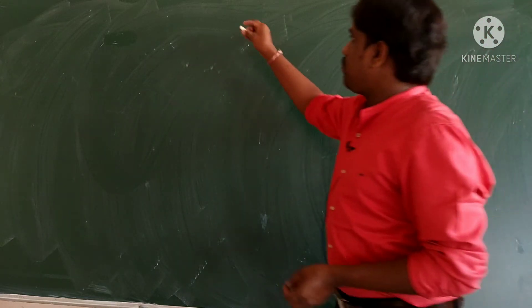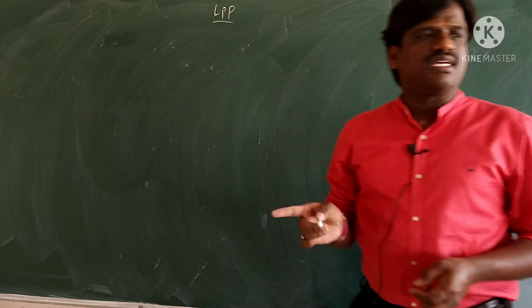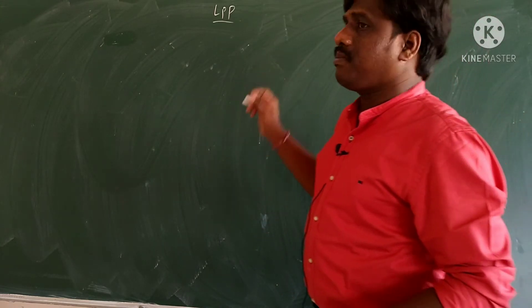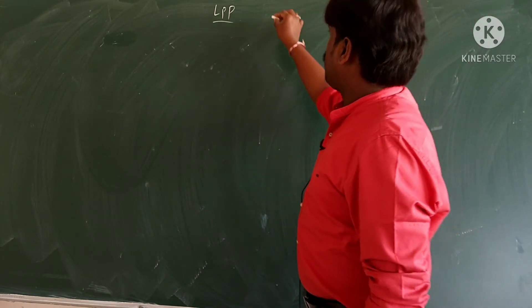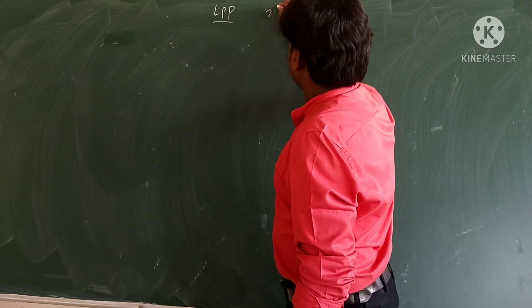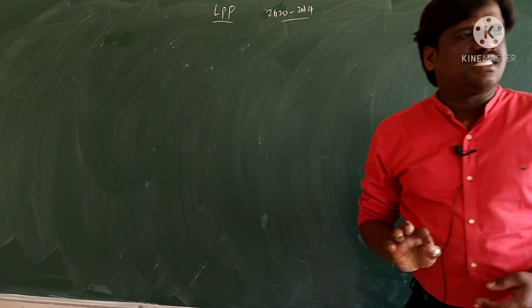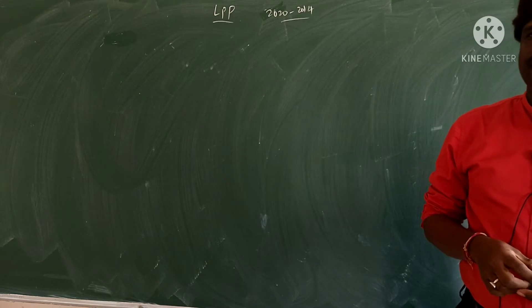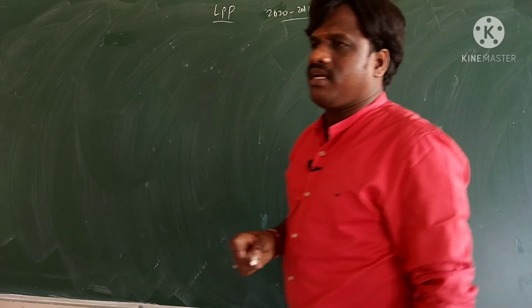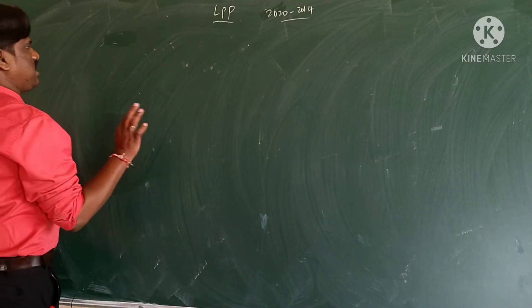We are going to start the next chapter: LPP - Linear Programming Problem. After this chapter I will start Vectors and 3D. We will solve previous year questions from 2014 to 2020. LPP is an easy chapter - you are going to get four marks from this chapter. So for four marks, these are the basic things you have to remember.